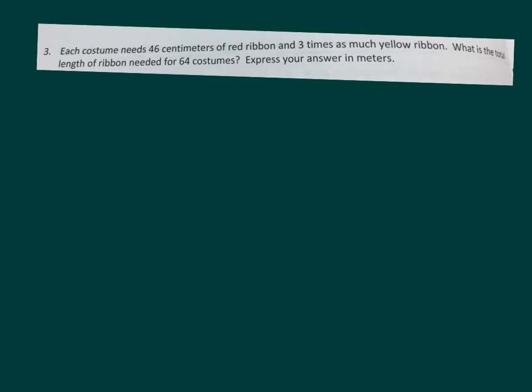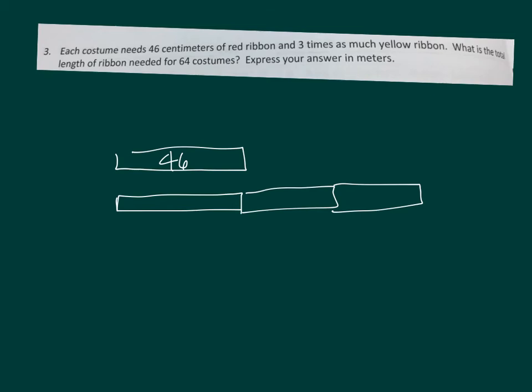The key for our tape diagram is this. We've got red ribbon. And we have three times as much as yellow ribbon. So red ribbon was 46. And yellow ribbon was three times as much. And then we have a total amount of all the ribbons. So yellow ribbon is 46, 46, 46 again. And then we have a total amount, which would be 4 times 46.